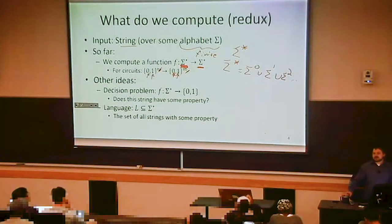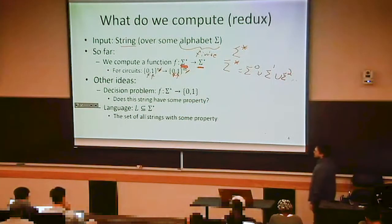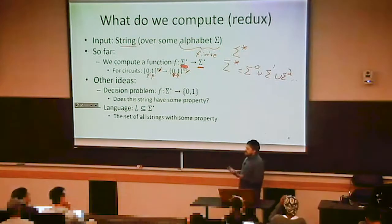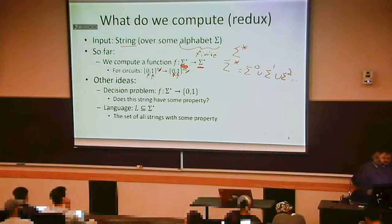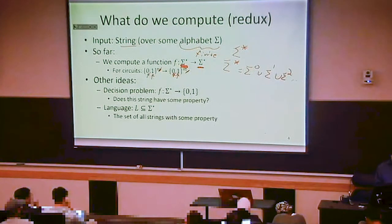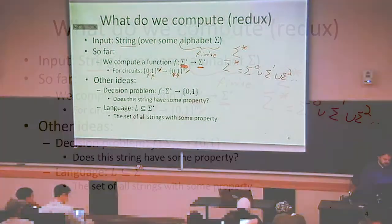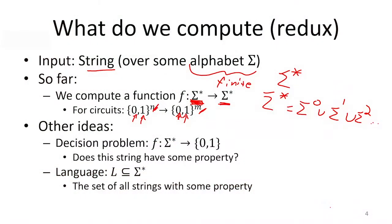We're going to expand this a little bit. These are different ways to think about what is the same thing, but there are going to be some advantages to thinking about what we're computing in a slightly different way. When we have a function that computes on the domain of strings, and the codomain is bits — like true or false, or zero or one — we call those decision problems.